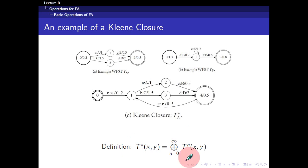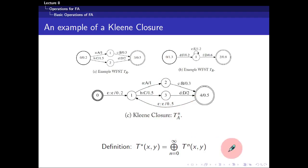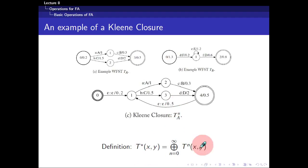Intuitively, if you complete the loop one time, you get T to the power 1. If you complete it twice, you get T times T, or T squared. Three times gives T cubed, and so on to infinity. You sum all the weights up to determine the final weight. That's the Kleene closure.